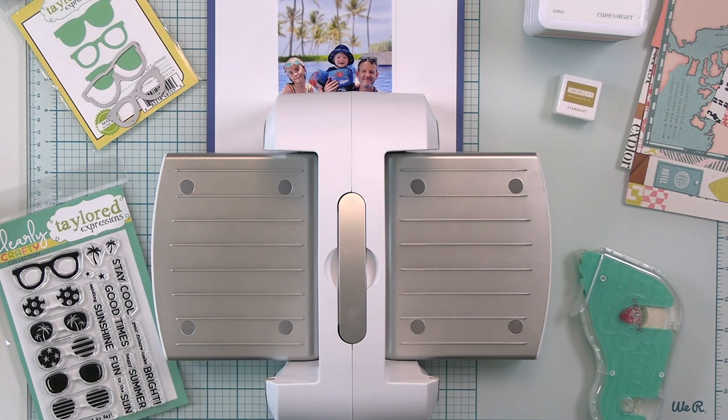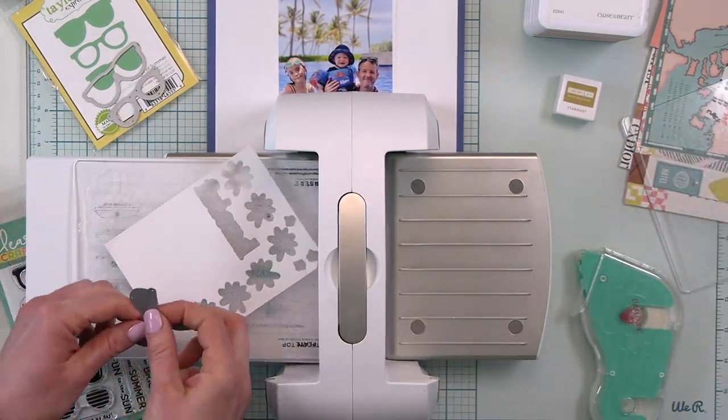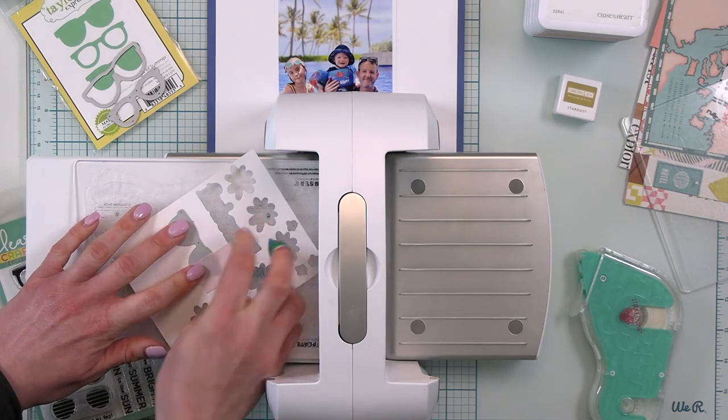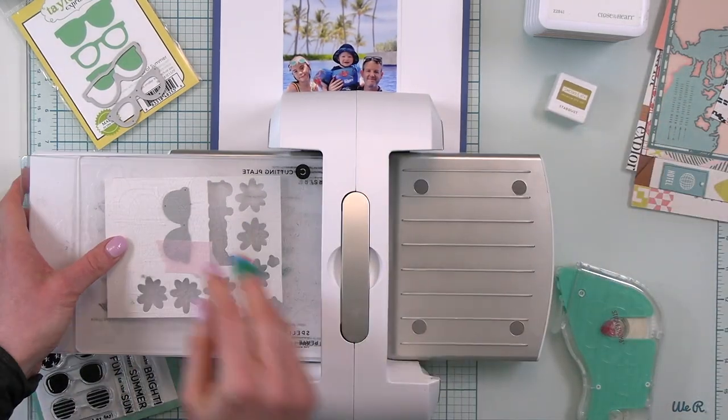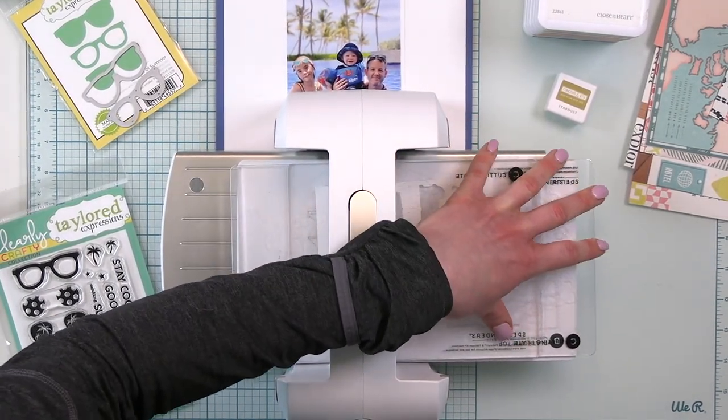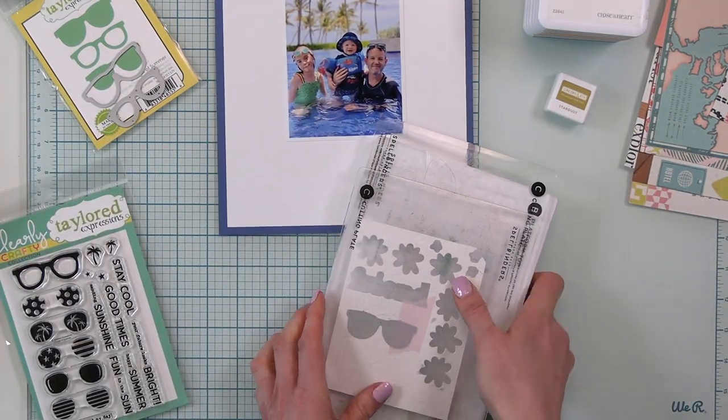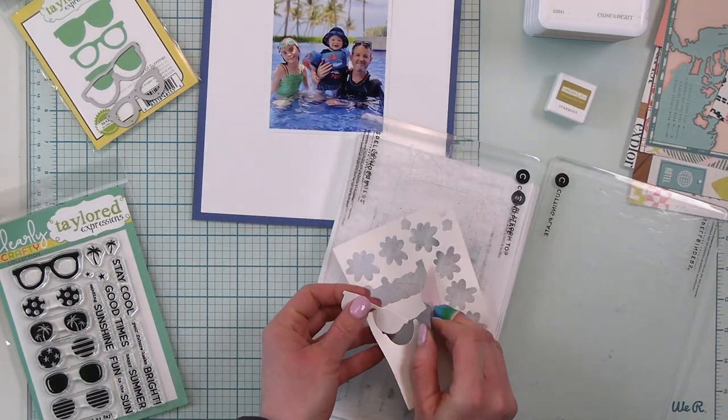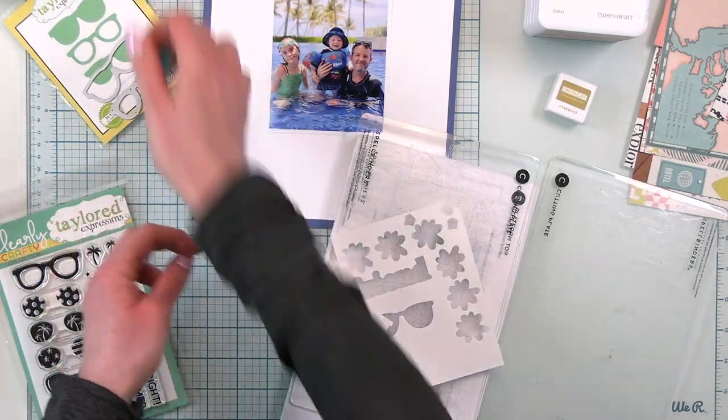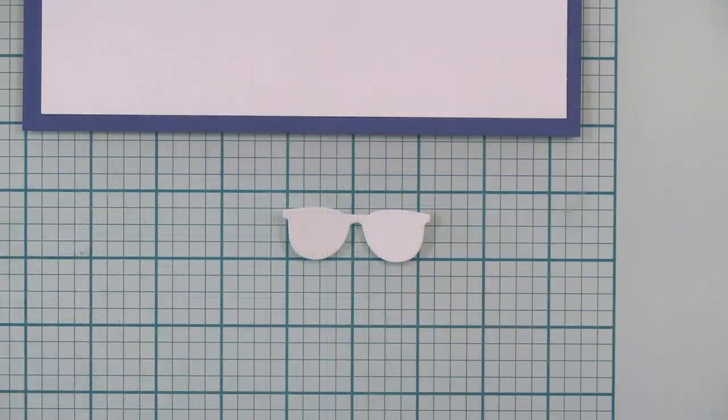This is my Platinum 6 machine from Spellbinders and I am going to create a fun little accent first. The first thing I'm going to do is use the solid sunglasses to cut out a plain white piece of those sunglasses. I'm going to create a really fun accent with some deco foil, some products from ThermaWeb and it's going to create like a custom embellishment for this layout but I need to give it some drying time so I'm going to do that first.